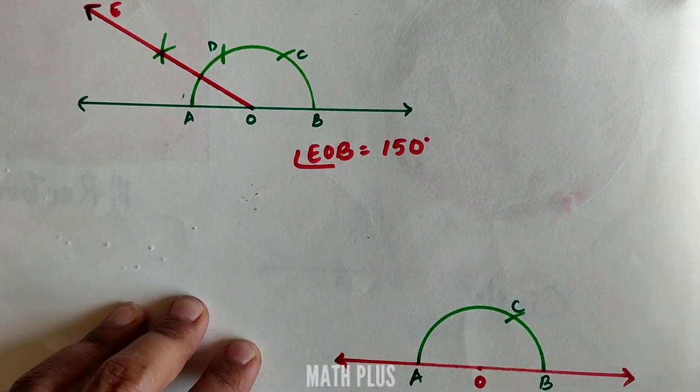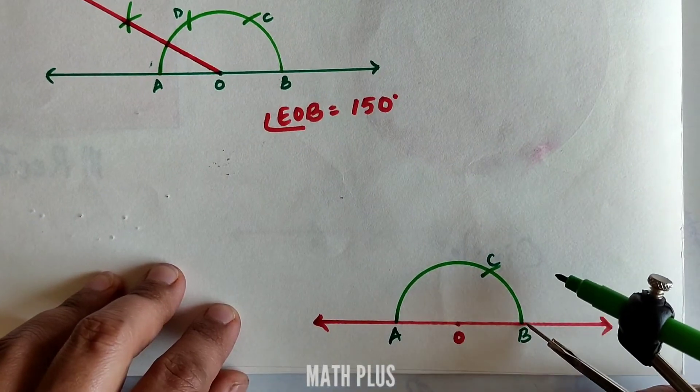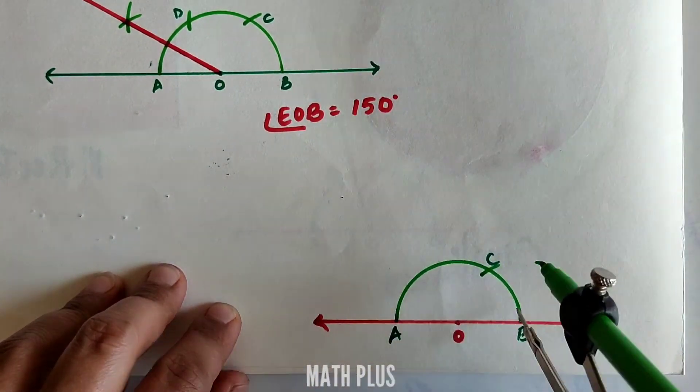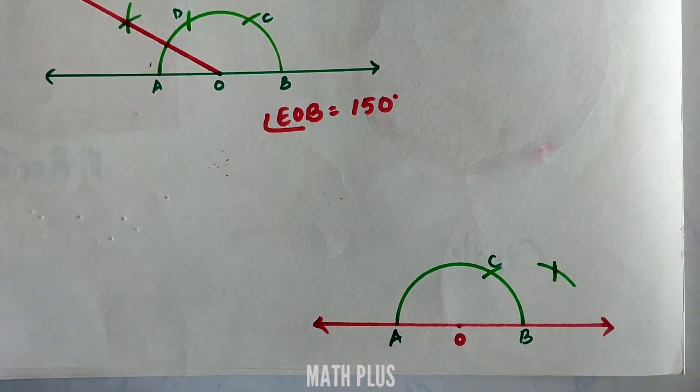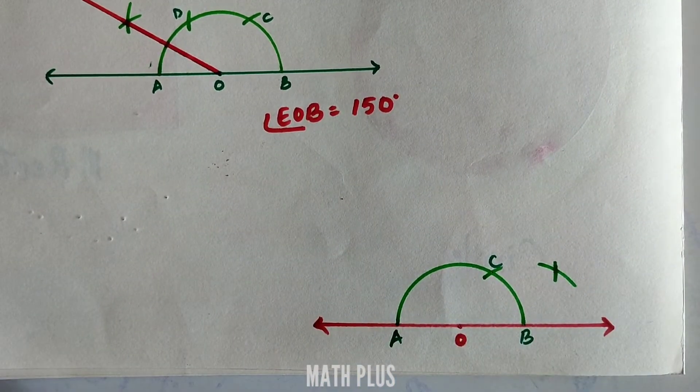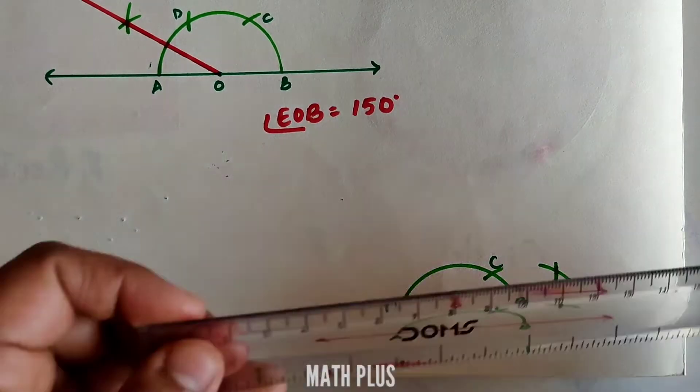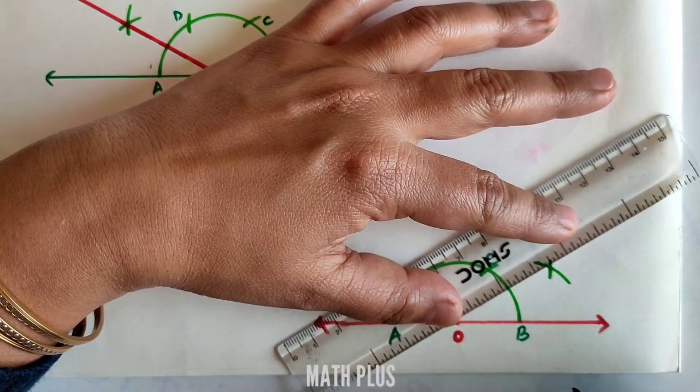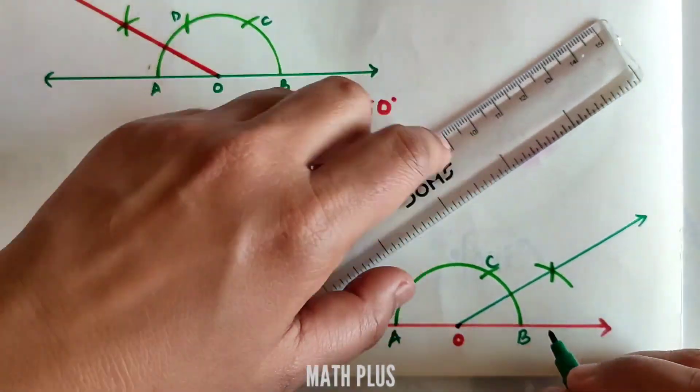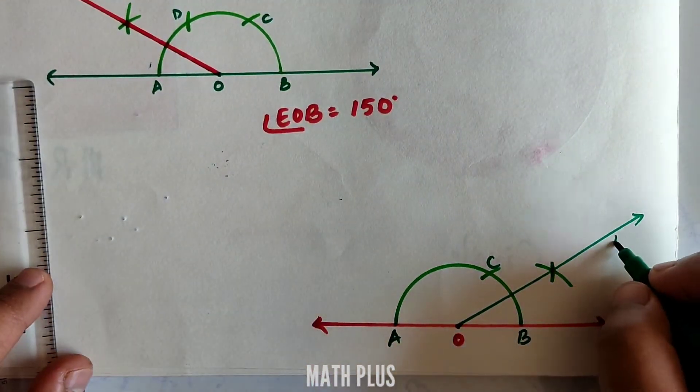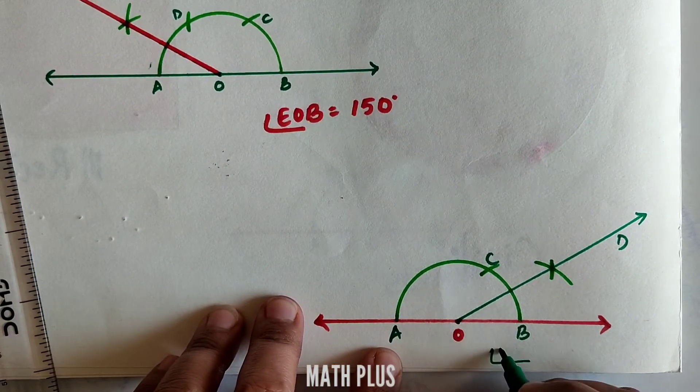From B draw an arc, from C draw another arc. The radius of the arcs should be the same. Now join O to the intersected arc that we have received and name the point as D. So angle DOB